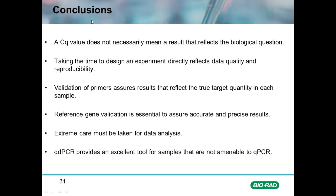This concludes the video segments on the Ultimate qPCR Experiment. A few key points: a Cq value does not necessarily mean a result that reflects the biological question, and an amplification curve does not necessarily represent actual data in the qPCR experiment. Taking the time to design an experiment directly reflects the data quality and reproducibility. Validation of primers assures results that reflect the true target quantity in the samples, as opposed to artifactual data generated from contaminants that could affect primer annealing and the reaction efficiency, which could artifactually raise or lower Cq values inconsequent to the amount of actual target in the sample.